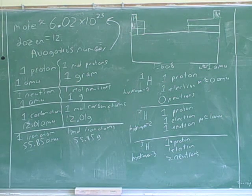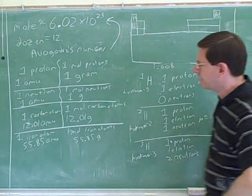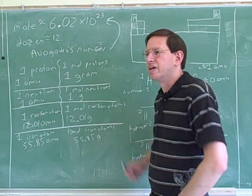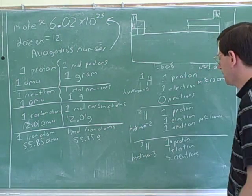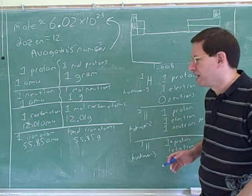Or looking here at neon, one mole of neon would have a mass of 20.18 grams. So that's how we can deal with the masses of the particles. All right, so what we've learned here now is how to talk about the masses of the elements.